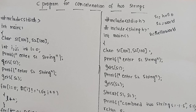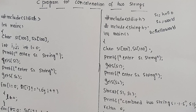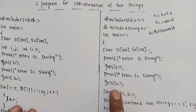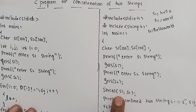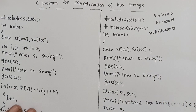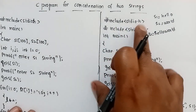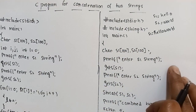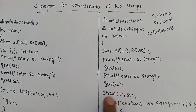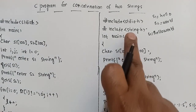We will discuss the concatenation. The first approach uses string handling functions with two strings. There is a string handling function called strcat. It takes S2 and S1. We will use the string handling function to find the concatenated result.